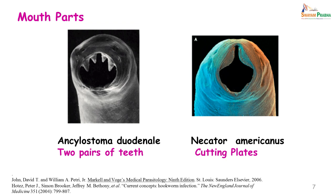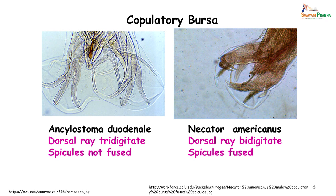The worms can further be differentiated based on their mouth parts. Ankylostoma duodenale has 2 pairs of teeth and Necator americanus shows cutting plates, which they use to attach to the mucosa of the small intestine and suck blood. The copulatory bursa also helps differentiate the adult worms. In Ankylostoma duodenale the dorsal ray is tridigitate and the spicules are not fused, whereas in Necator americanus the dorsal ray is bidigitate and the spicules are fused.